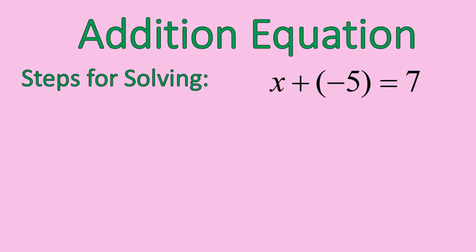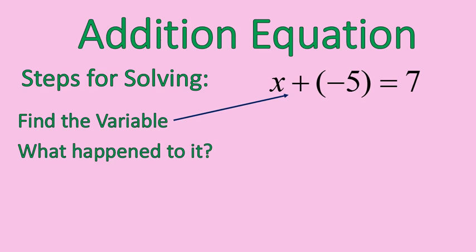But we will follow the same exact steps. Those steps I told you to remember and follow, let's see how they work when we have a negative number. So you find the variable, which is right there. X is our variable. We ask ourselves, what happened to this variable? Well, we added negative 5. That's the part that's not connected. What's connected with X plus negative 5.